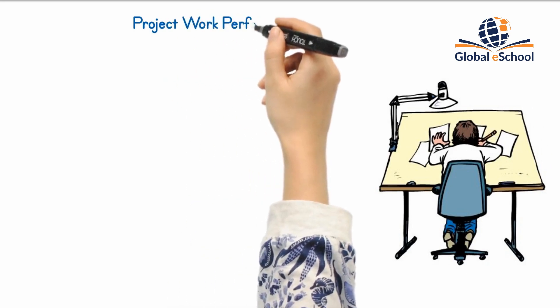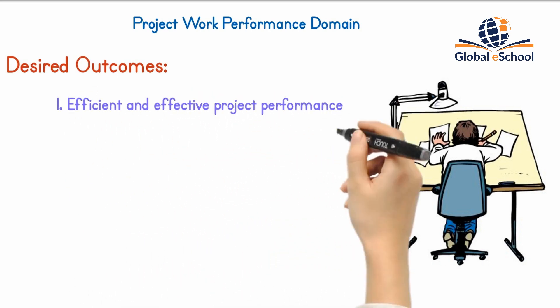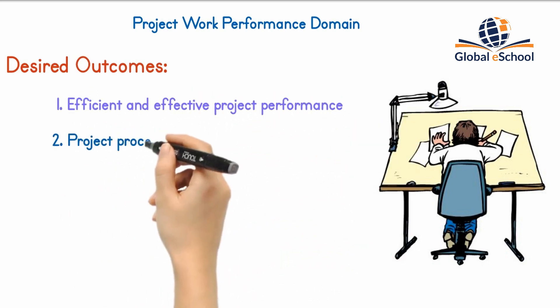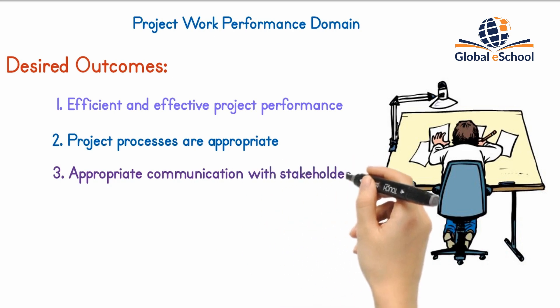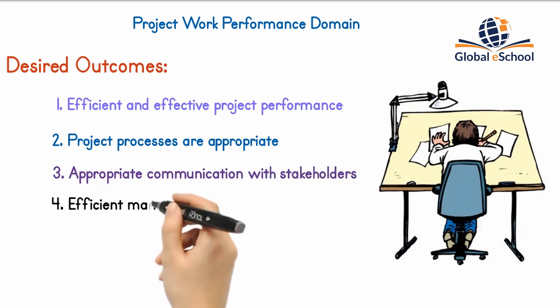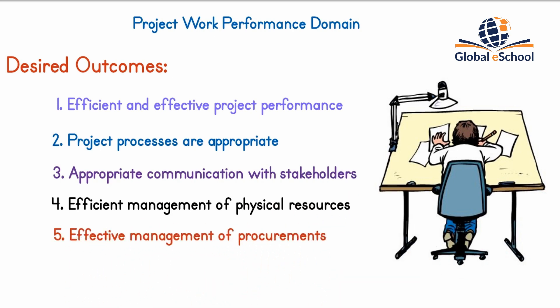The project work performance domain addresses activities and functions associated with establishing project processes, managing physical resources, and fostering a learning environment. Effective execution results in: efficient and effective project performance, project processes appropriate for the project and environment, appropriate communication with stakeholders, efficient management of physical resources, effective management of procurements, and improved team capability due to continuous learning and process improvements.